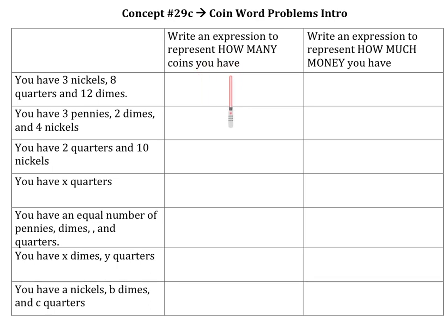I want not the answer — I want what you would do to figure out how many coins you have. So this is not a trick question. If you have three nickels, eight quarters, and twelve dimes, the number of coins you have is going to be three plus eight plus twelve. As simple as that.